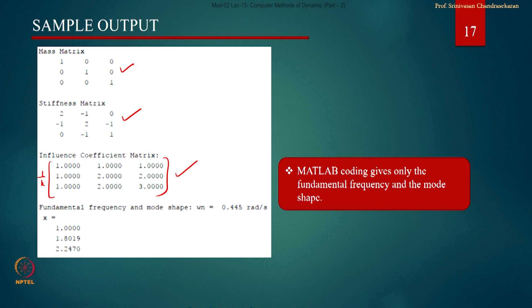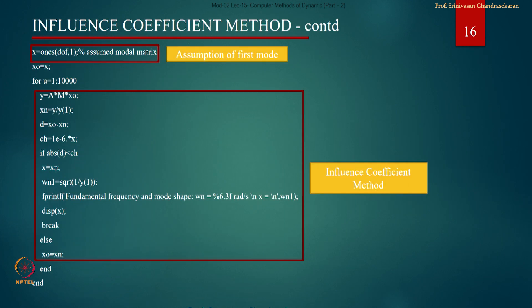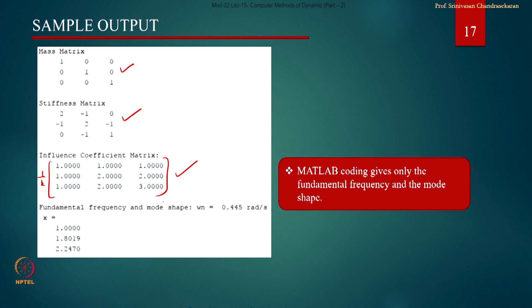Once we know this, the coding estimates the fundamental frequency and mode shape. The fundamental frequency is 0.445 and the first mode shape closely compares and agrees with the previous methods.